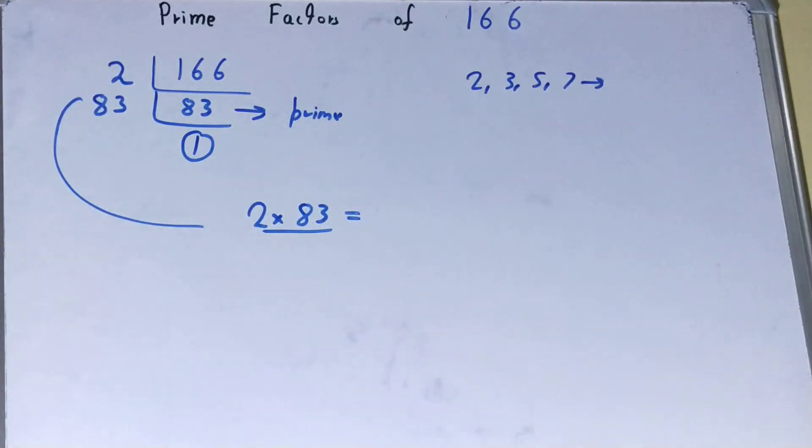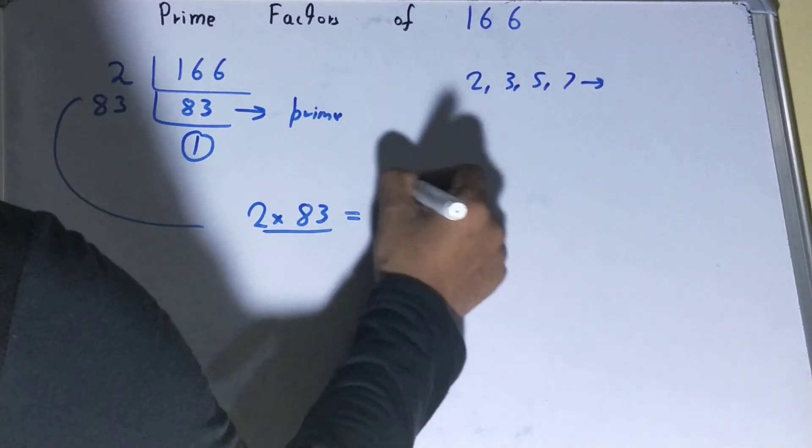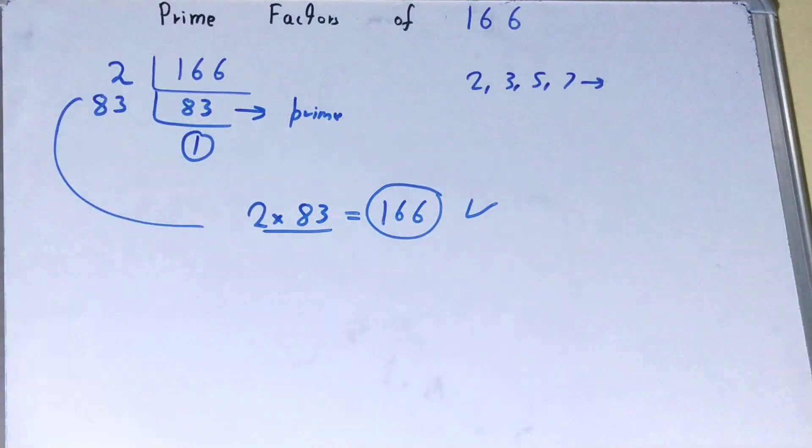If you want to confirm whether it's right, you can multiply them. If you get the number back, your calculation is correct. If you don't, you need to recheck. This was all about prime factors of 166.